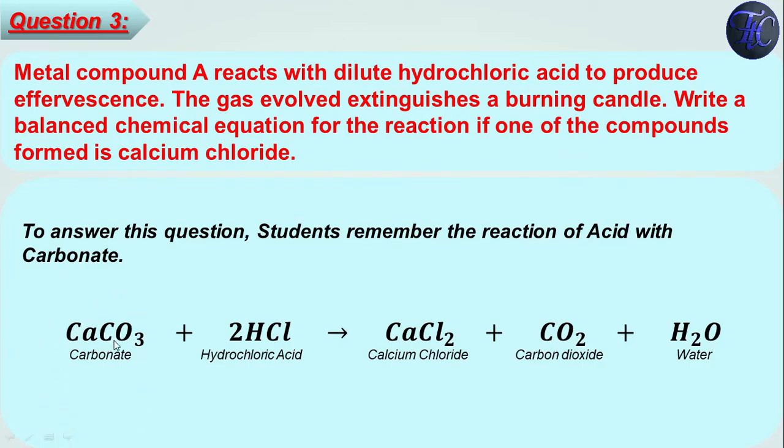Calcium carbonate CaCO₃ reacts with 2HCl that is hydrochloric acid. From CaCO₃, Ca and from HCl, Cl₂ will combine to form CaCl₂ that is calcium chloride. From remaining CO₃ from calcium carbonate, CO₂ is formed. Remaining H₂ and O will combine to form H₂O. This is the chemical reaction we have to write.